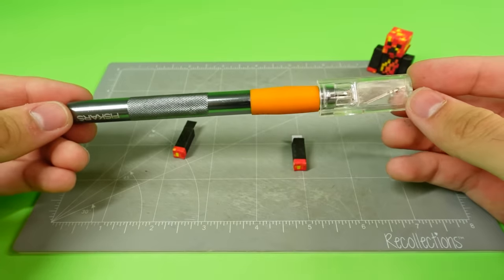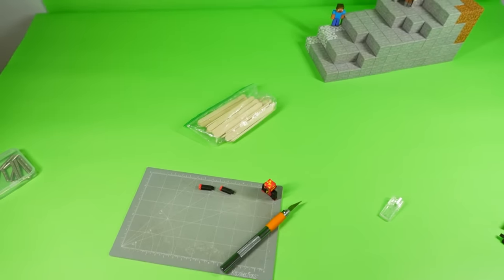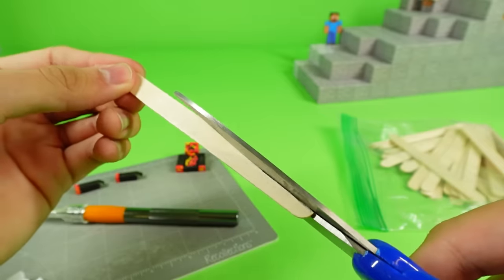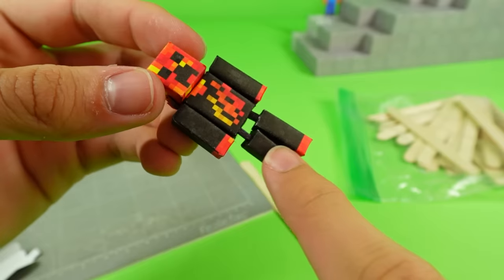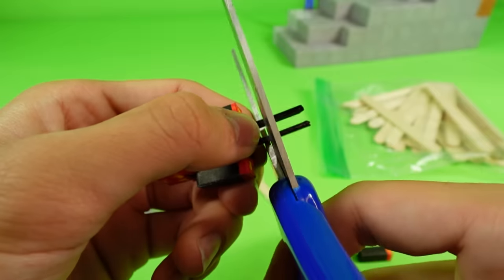For the legs, I cut small slits into the tops of them and brought out a new material. Popsicle sticks. I basically cut them in half and stuck a stick in the legs to connect them with the torso. Just make sure the sticks don't come down too far. We might need to snip snip.